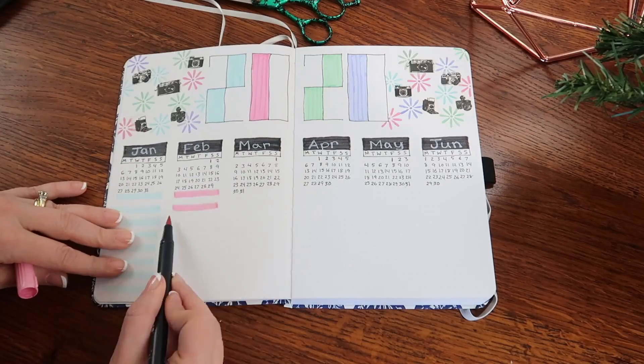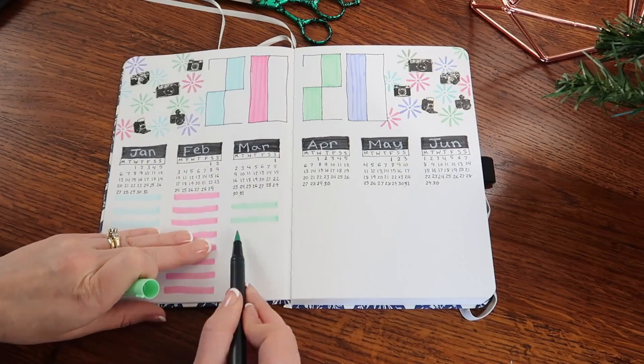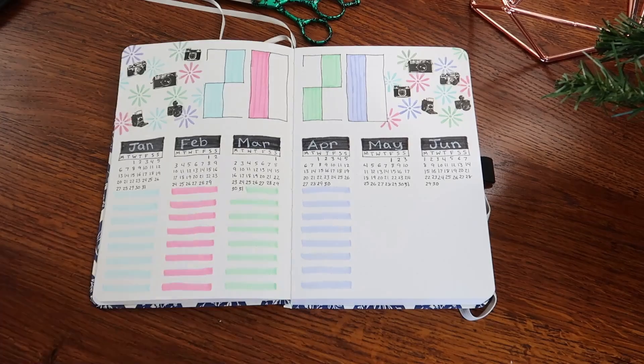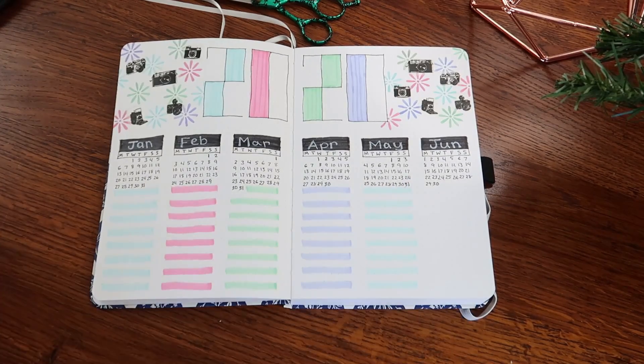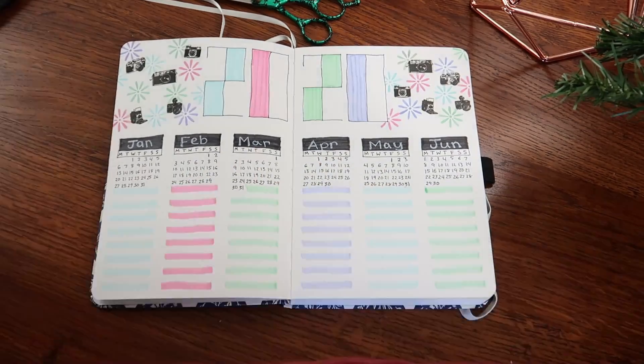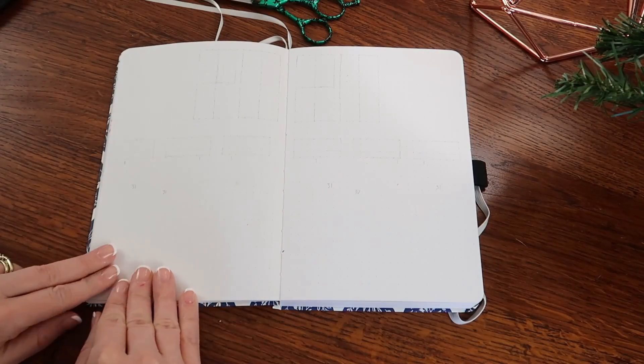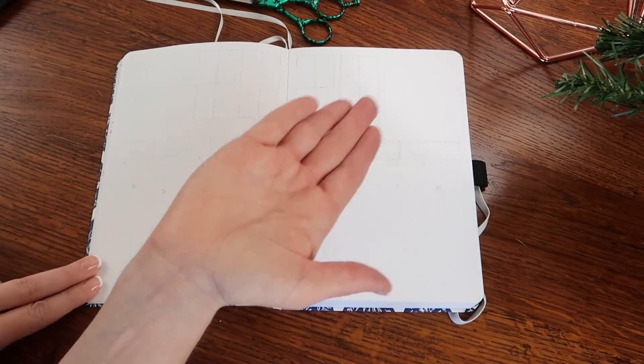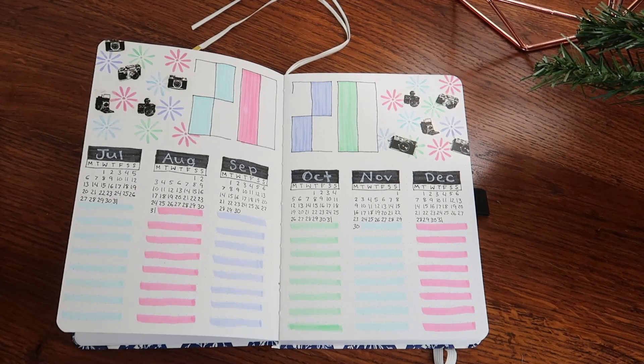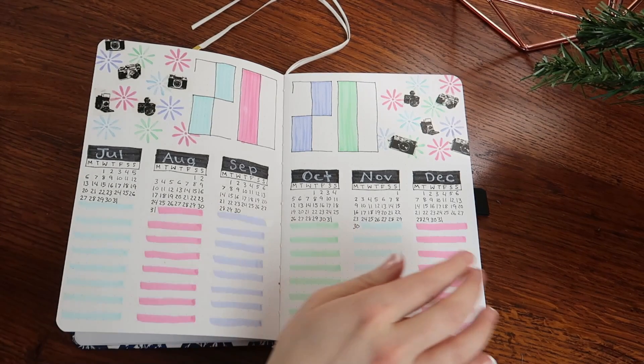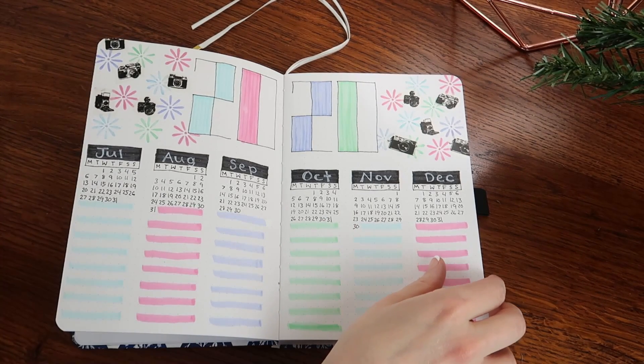So at the bottom where I am drawing these lines is just where I'm going to add any important dates, holidays, birthdays, all of those things. And since I'm just adding January to June on this page, the next page is going to be the exact same thing. I didn't bother showing you guys the entire process. I just went ahead and did it and I thought I would share it with you guys and it's from July to December.